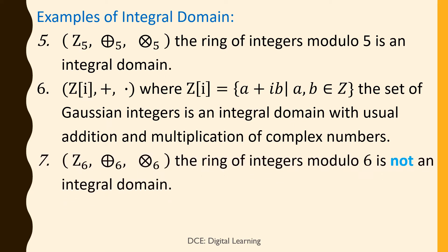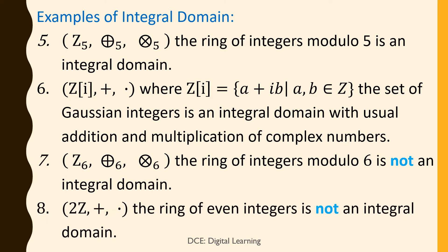7. Z₆ with addition modulo 6 and multiplication modulo 6 — the ring of integers modulo 6 — is not an integral domain because it has zero divisors. 8. 2Z (plus, dot), the ring of even integers, is not an integral domain because it has no unity.